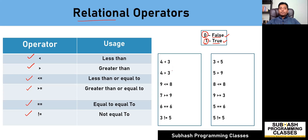Let us solve all these expressions one by one. Is the value of four less than three? No, false — therefore the result is zero. Is the value of four greater than three? Yes, it is true — therefore the result is one. Is the value of nine less than or equal to eight? False — it is not less than nor is it equal to eight, therefore this will result in a zero value. Is the value of seven greater than or equal to nine? No — seven is not greater nor is it equal to nine, therefore this will result in a value of zero.